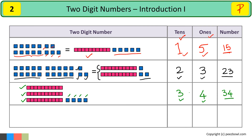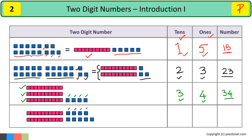Let us take one more example. In this case, we have 1, 2, 3, 4, 5, 6, 7, 8, and 9 ones, so I will write nine at the ones place. And we have 1 and 2 tens, so I will write two at the tens place. So this number is twenty-nine.